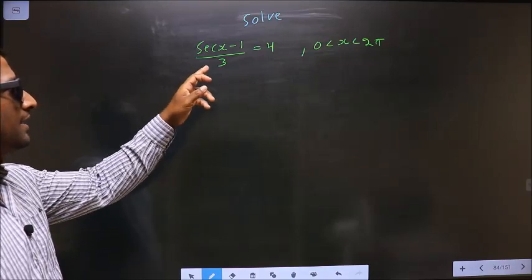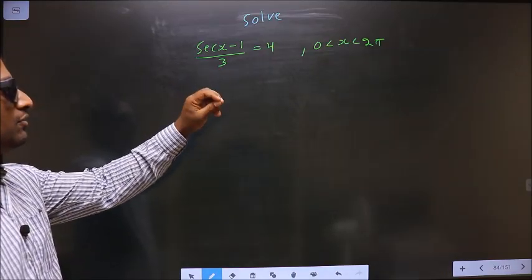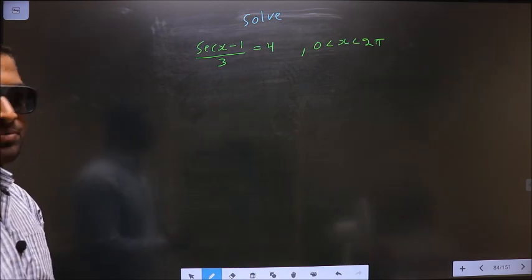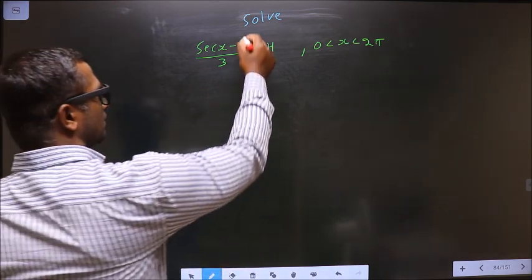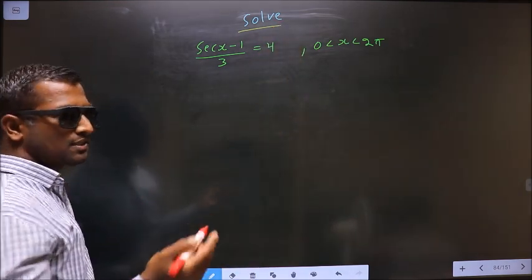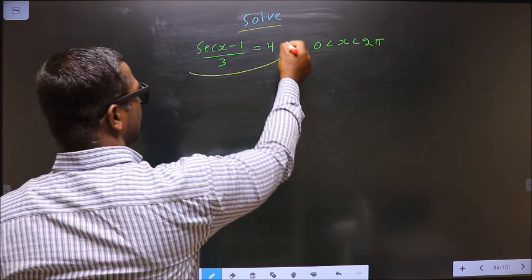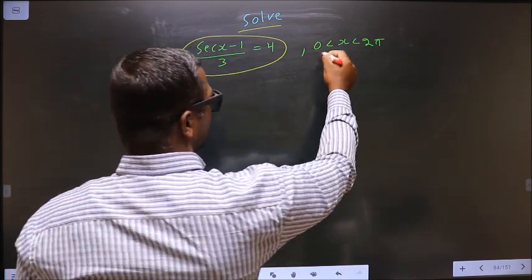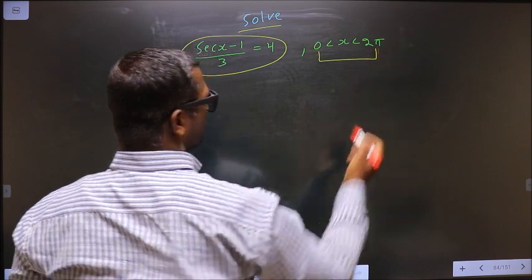Solve secant x minus 1 by 3 equal to 4, where x lies between 0 to 2 pi. They told you to solve, so you should find the values for x satisfying this equation, and it should lie in this interval 0 to 2 pi.